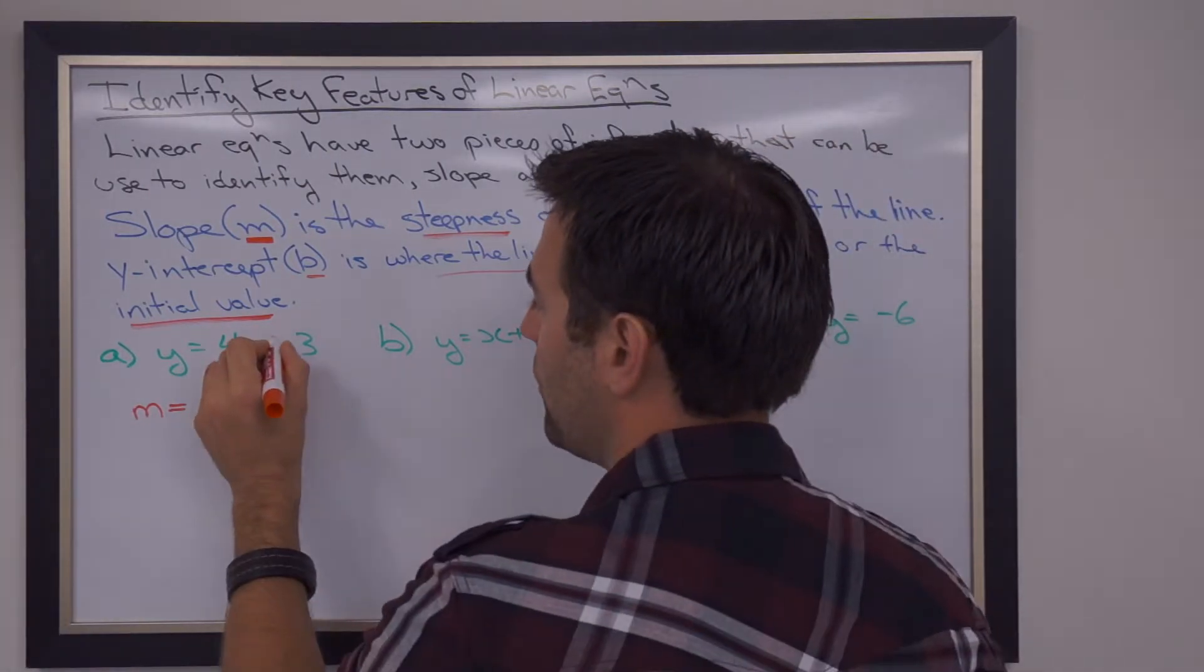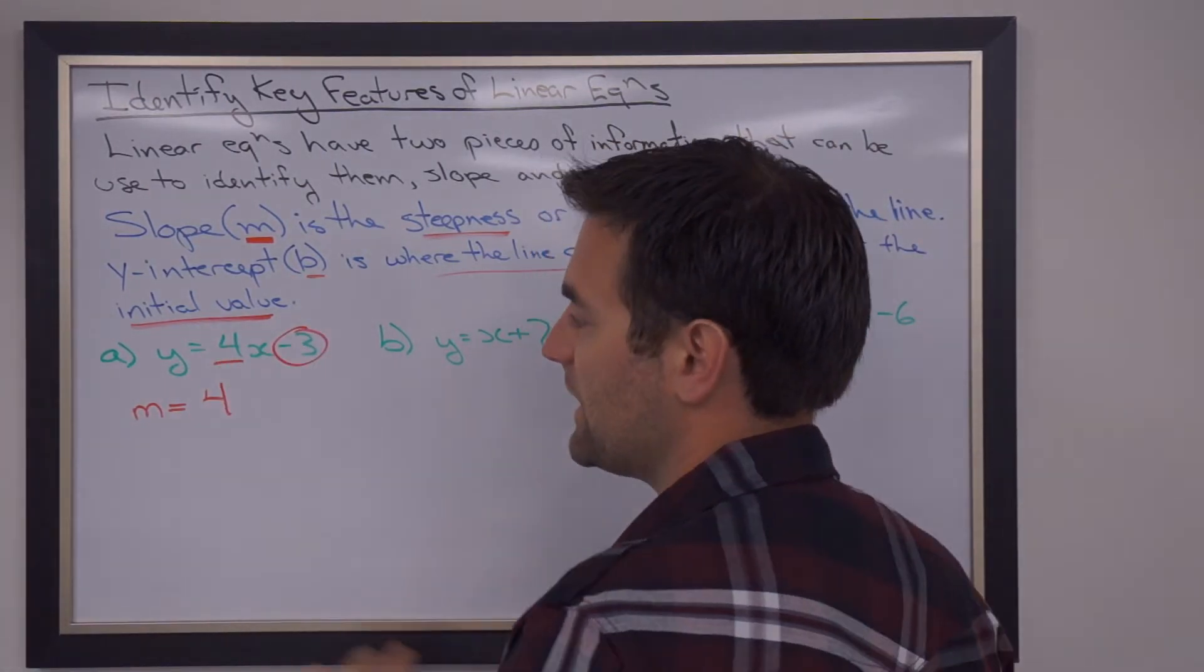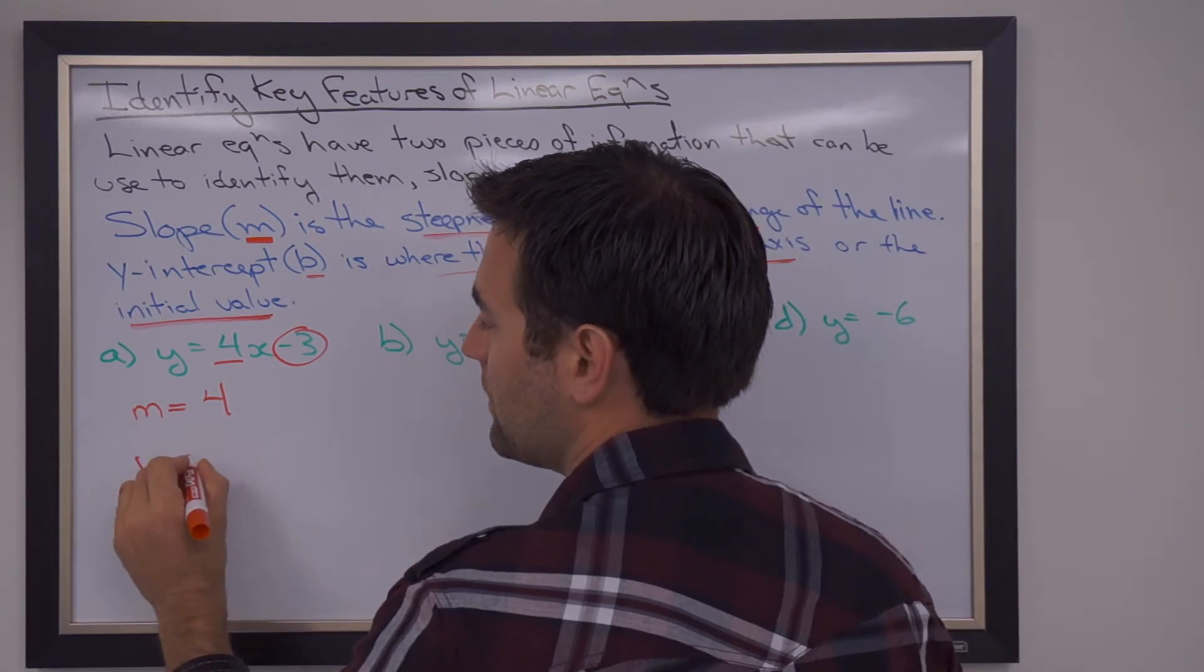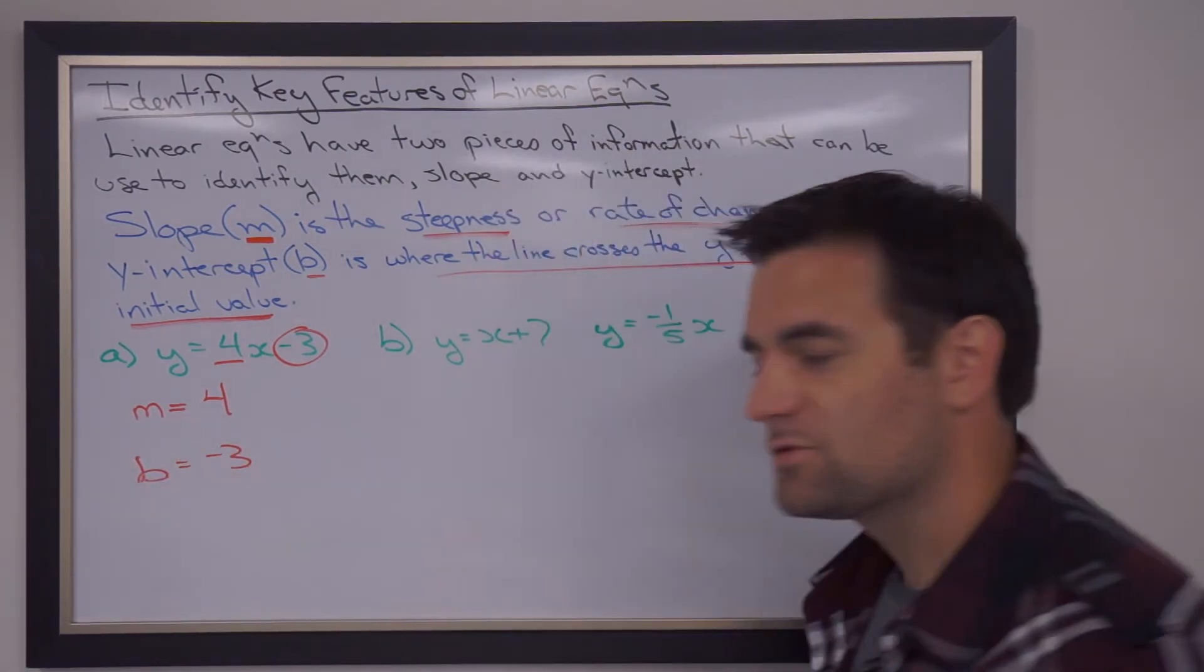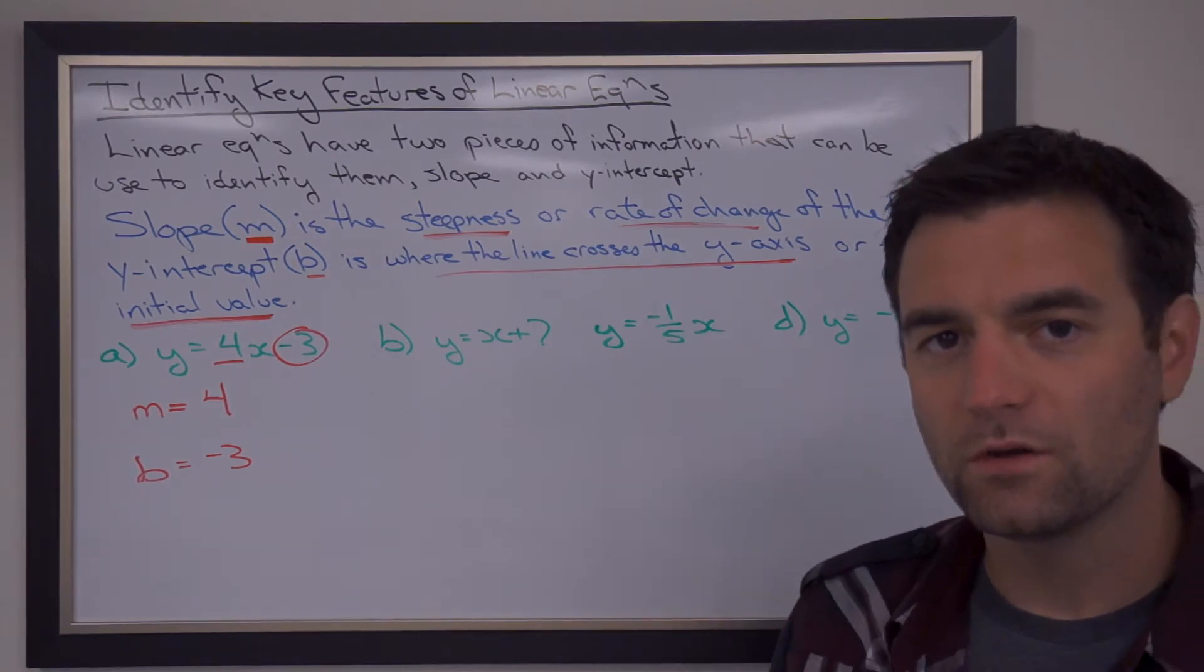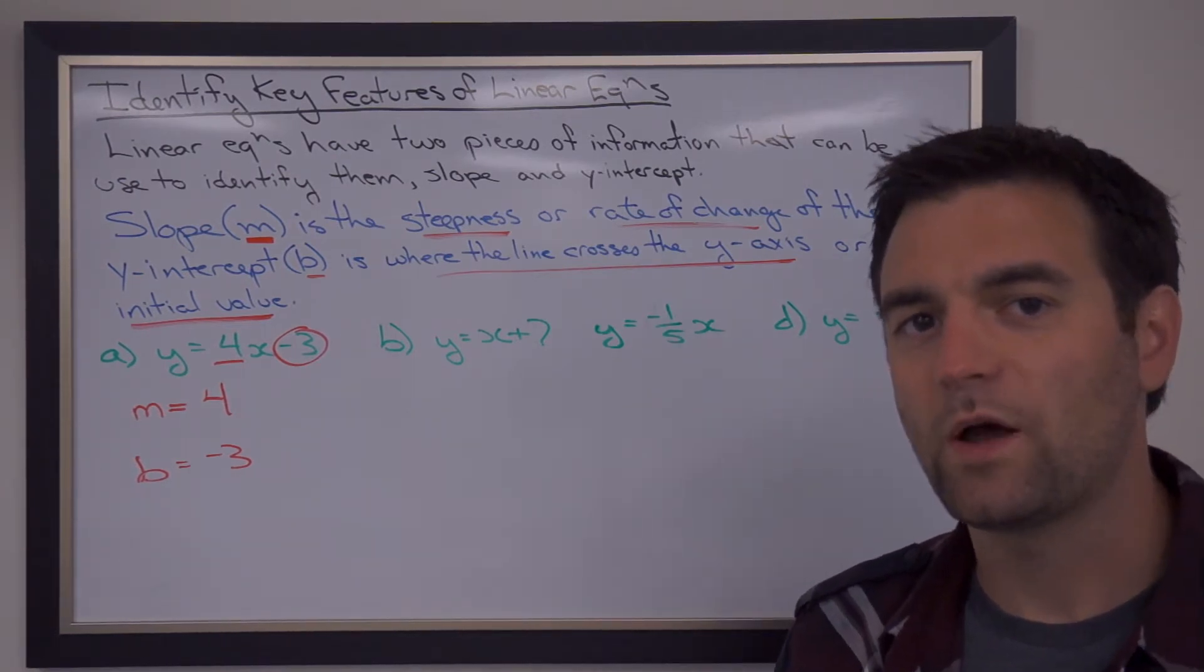The number that is by itself with no X, in this case the negative 3, that is our y-intercept. So the number beside the X is the slope, the number by itself is the y-intercept.